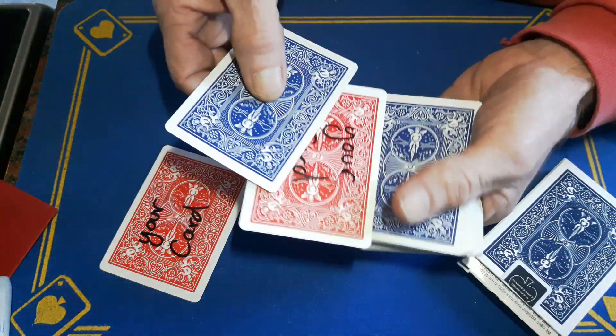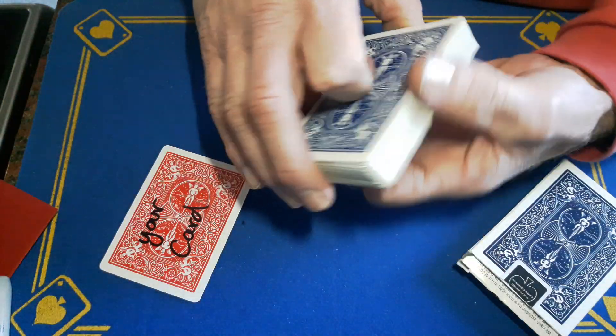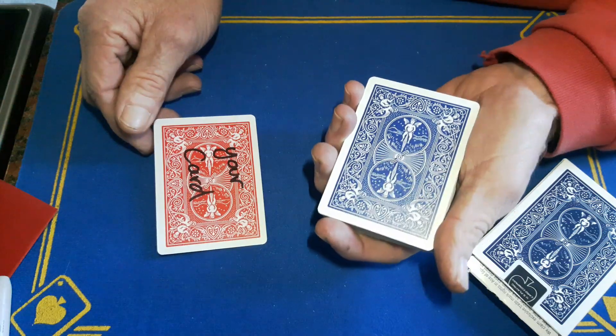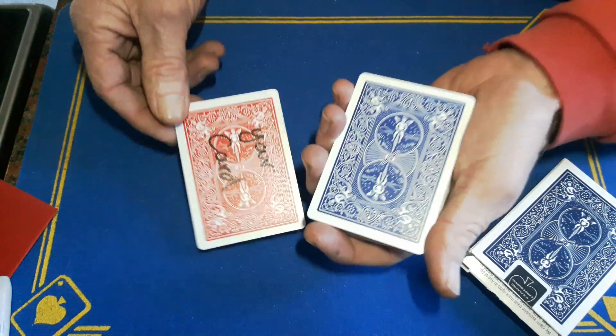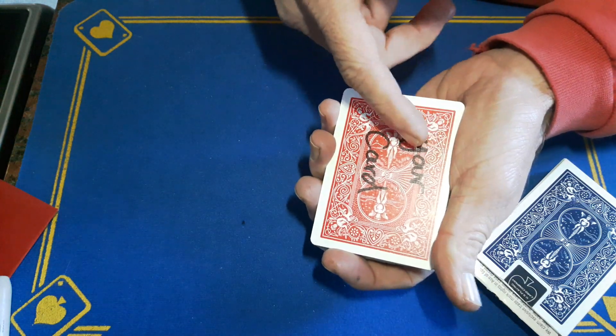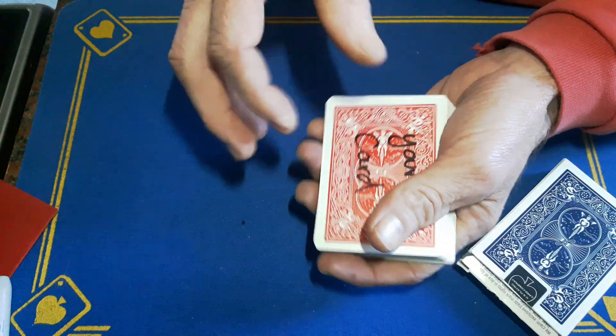So what you've got now, you've got a cover card on top of their signed card. You'll go back to this, your card. Now you can change the presentation of this however you want, but this is just how I did it. I'm going to put their card on top and say this is your card, and I'm going to turn over that triple lift again.